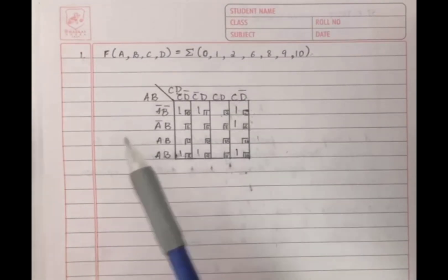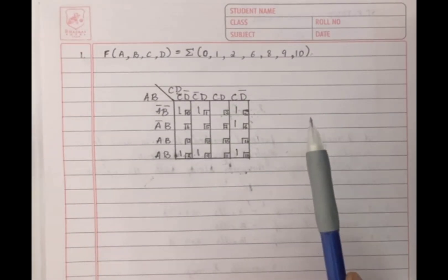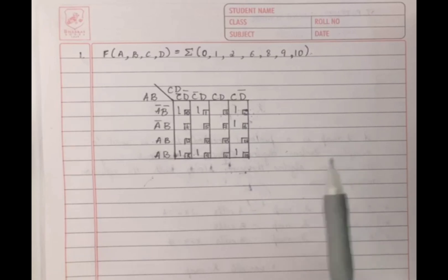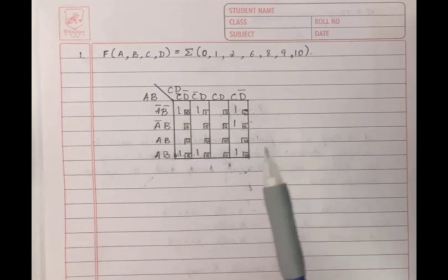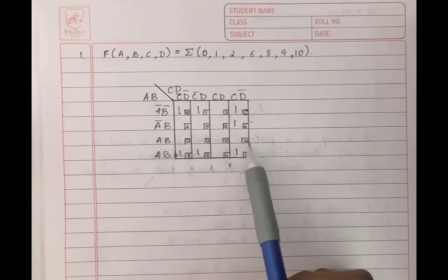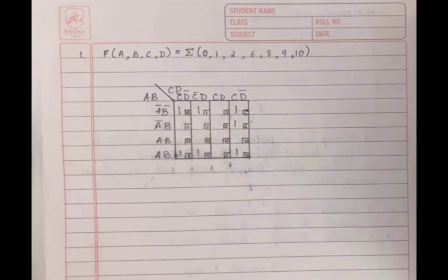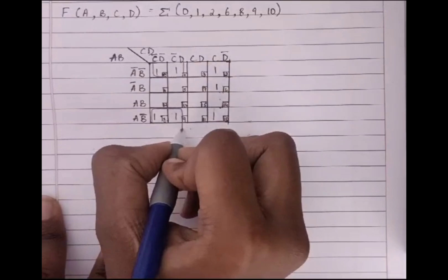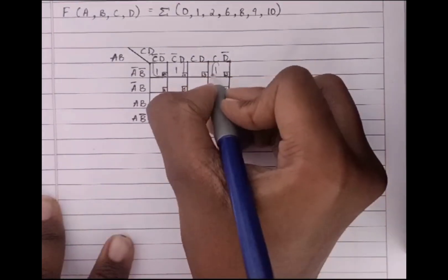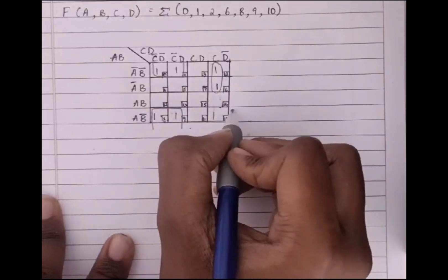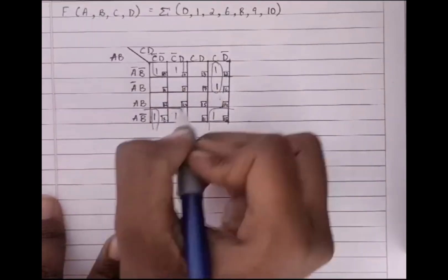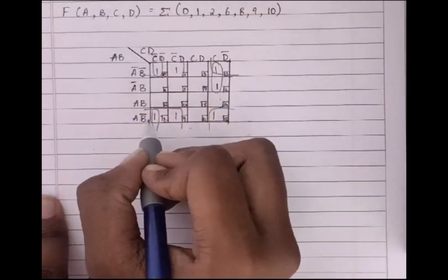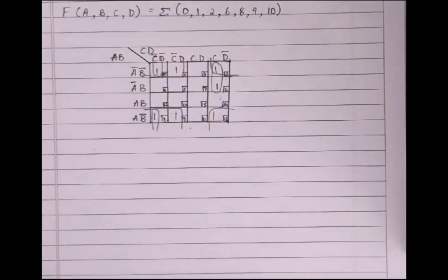Now we're going to group the ones into clusters: a single, a pair, a quad, or an octet. The groups must form rectangles, and the groups can wrap around the edges to form a quad. We pair cells to make a quad, make another pair, and since one is left out, we take all four corners together to make a quad.